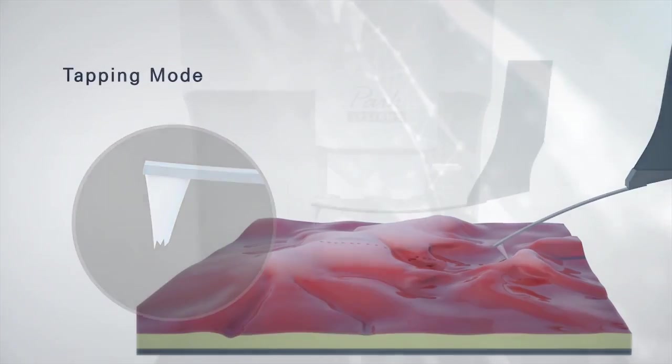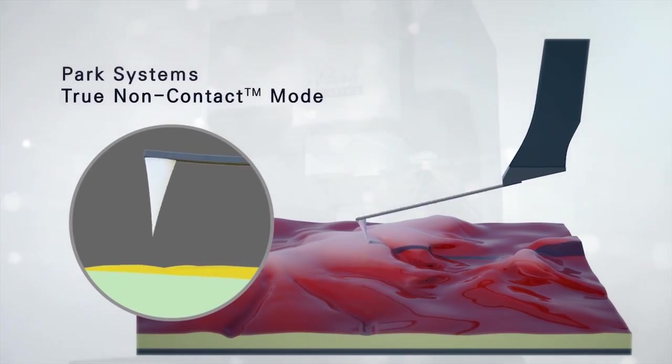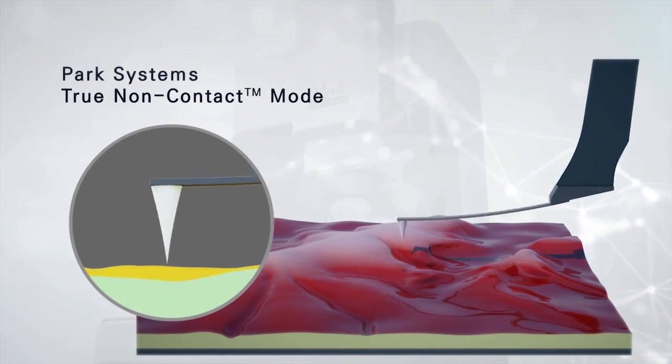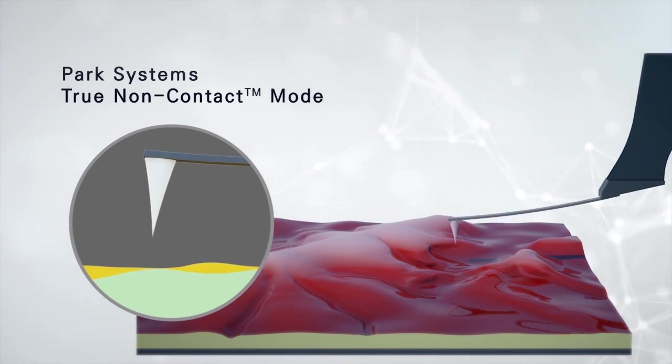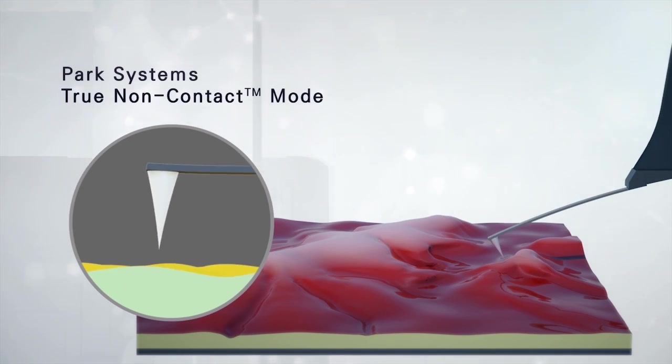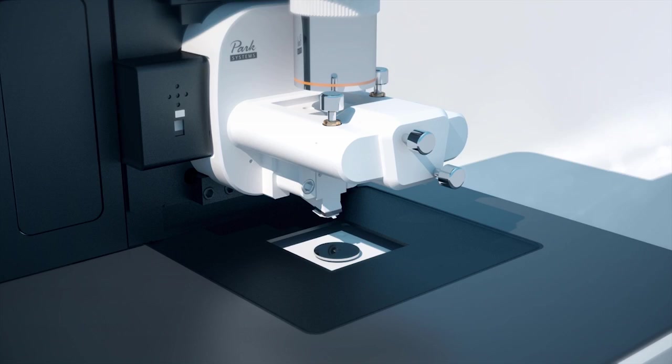AFM measurements with Park Systems' true non-contact mode involve no contact between the tip and sample, thus no sample damage and almost no tip blunting, enabling accurate measurement over many scans and also greatly lowering related tool upkeep costs.